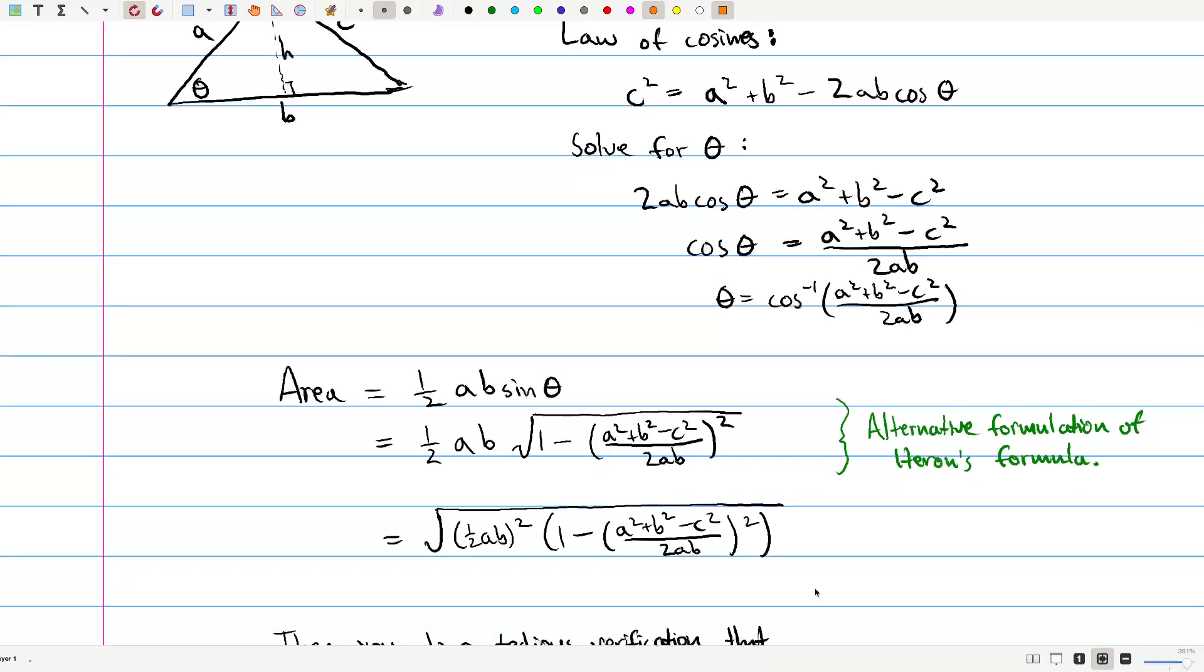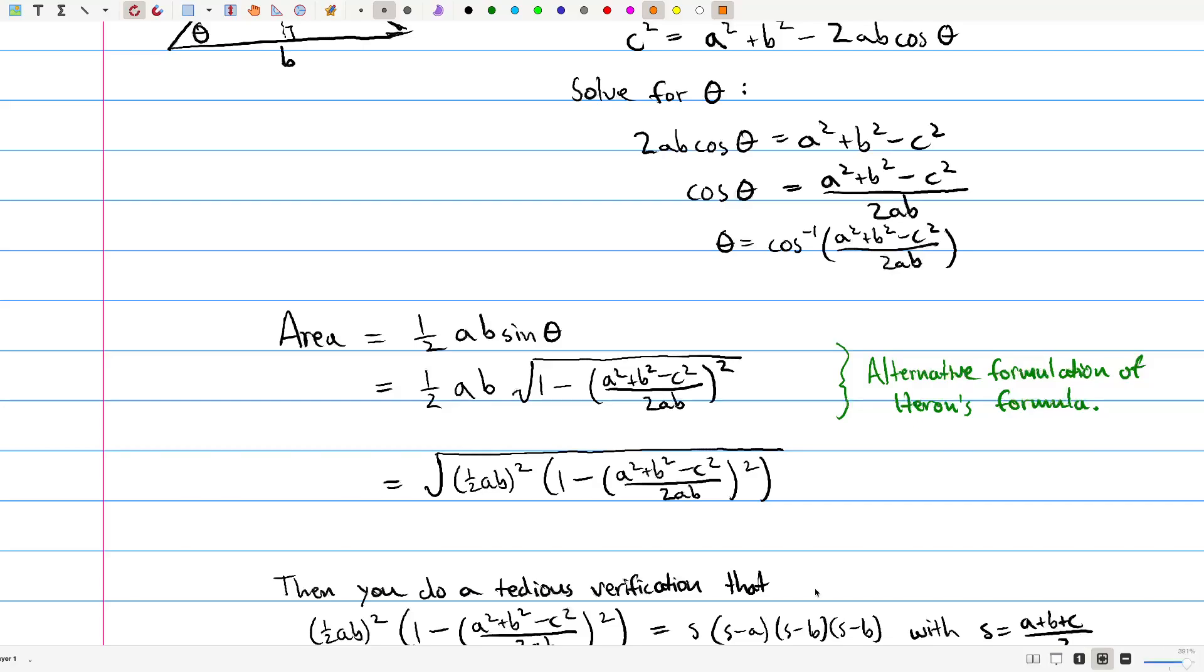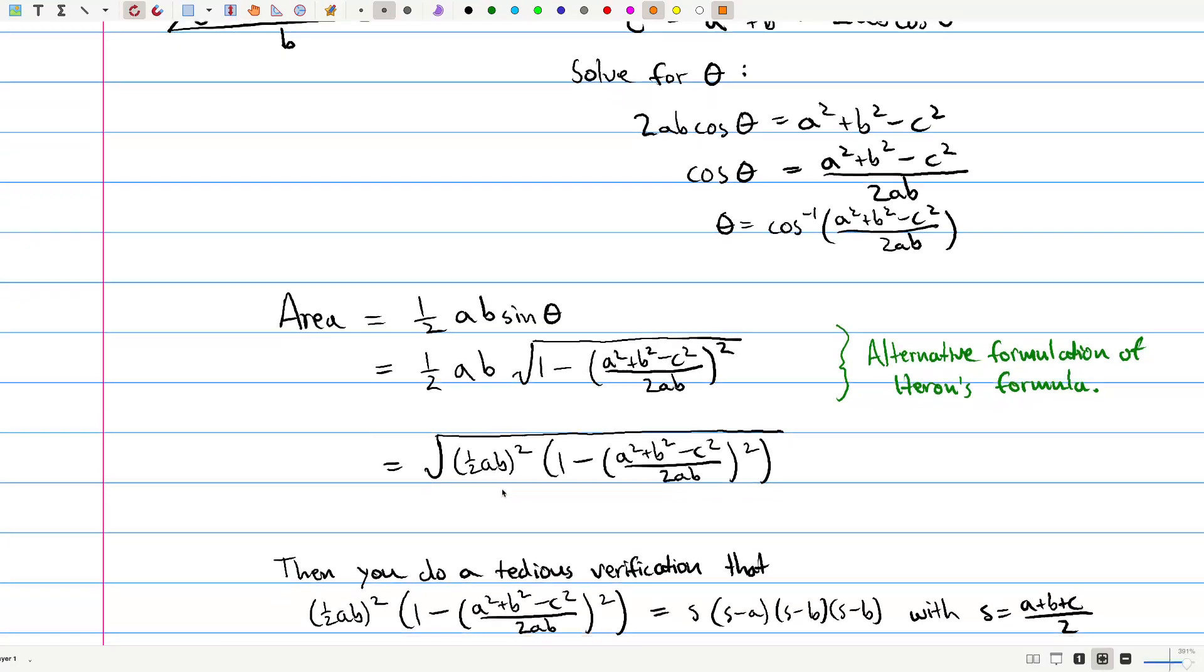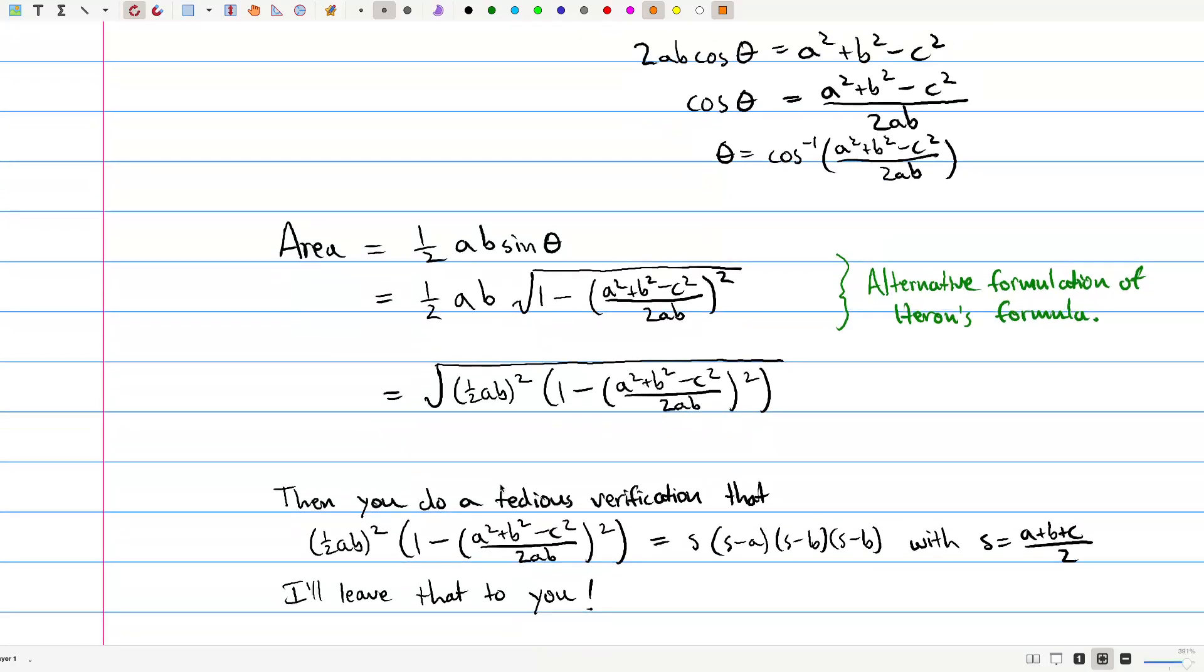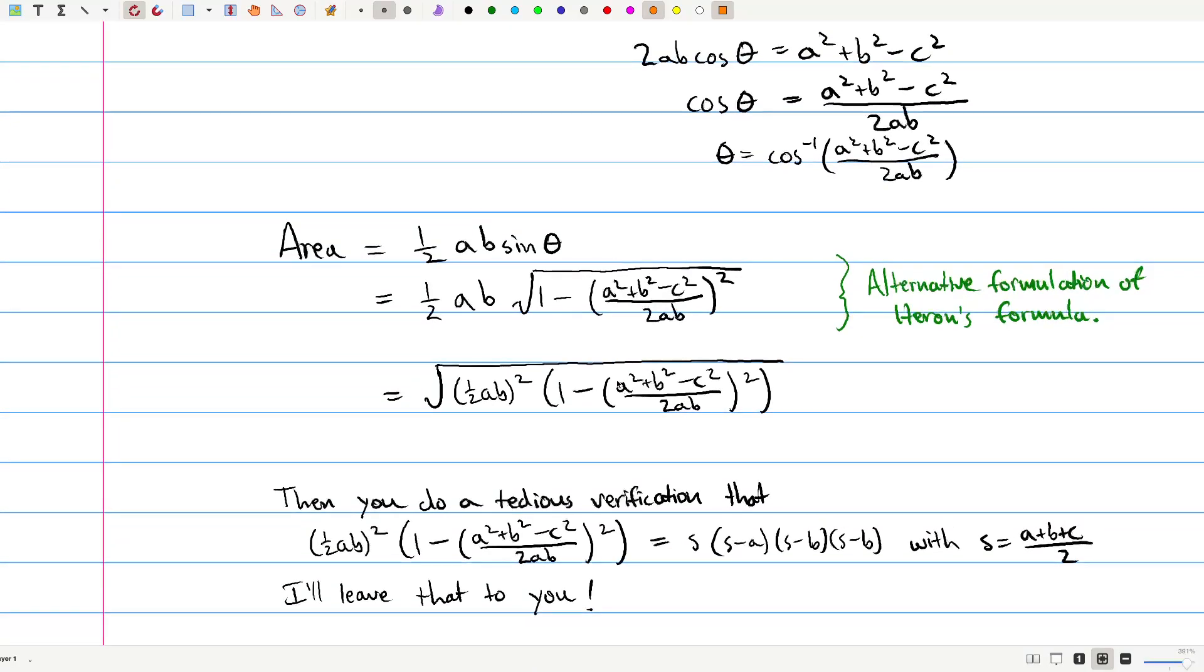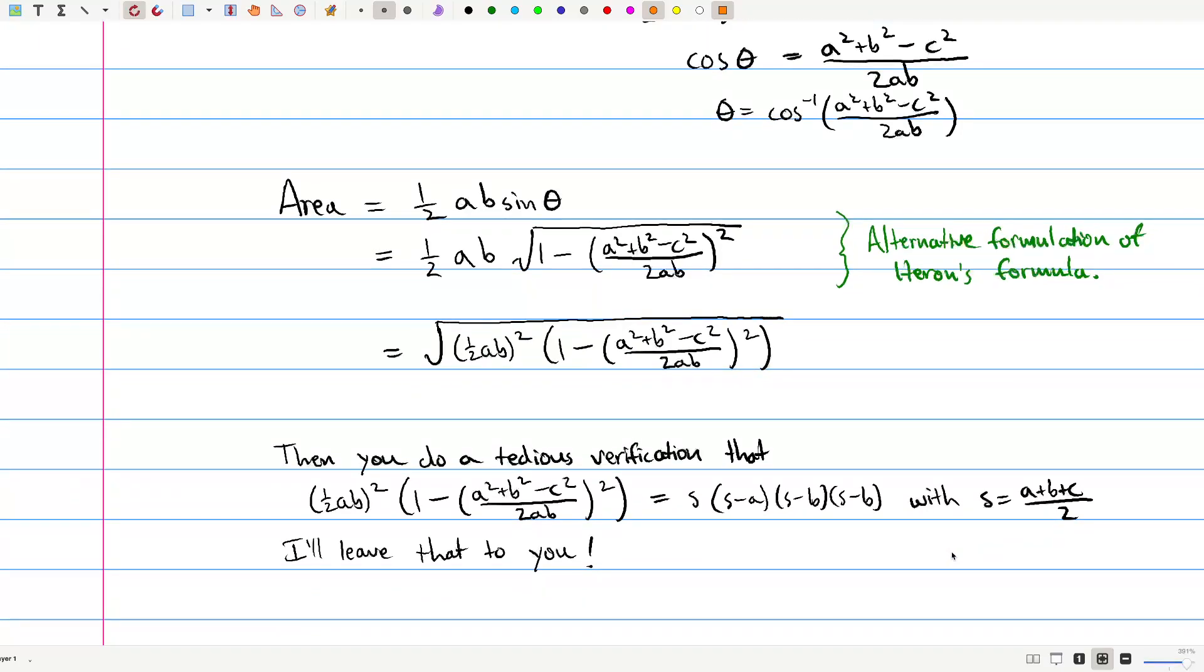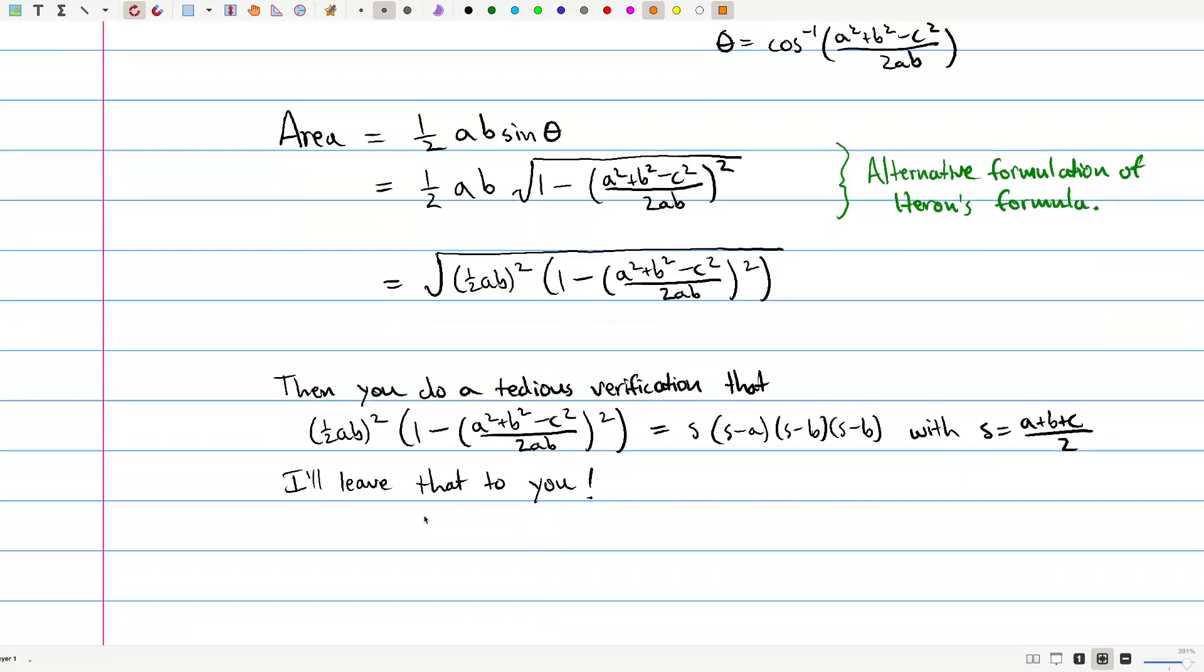But we want to see why it is Heron's formula. And so like before, I brought this in by squaring it. And now I'm going to cheat for this video and just say that you do a tedious calculation to show that what's inside the square root is equal to what's inside Heron's formula's square root, with s equal to what Heron's formula says s should be. And how do you do that? You kind of just multiply it all out and see that they're equal. It's not very illuminating, so I won't include it in this video.